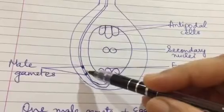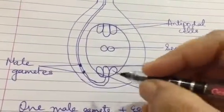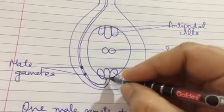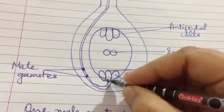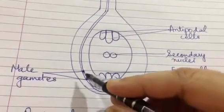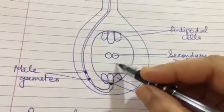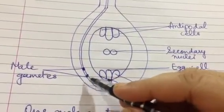The male nucleus divides into two nuclei known as male gametes. This point is known as micropyle, M-I-C-R-O-P-Y-L-E. Micropyle transfers the male gametes to the ovule.